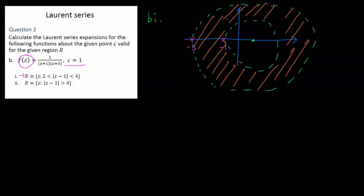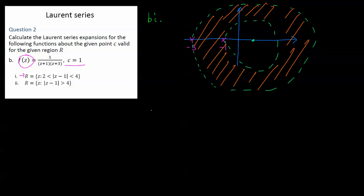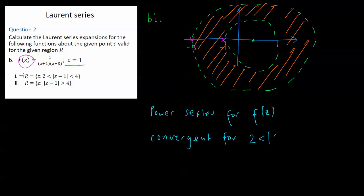We're looking for a power series representation — a power series for f(z) that is convergent in the annulus. So convergent for 2 < |z − 1| < 4. All the z values minus 1, the modulus of that from the origin, have to be between 2 and 4, and that will give us this region here.